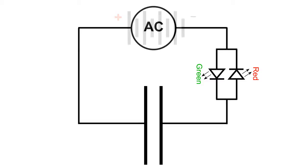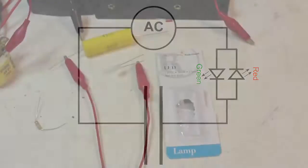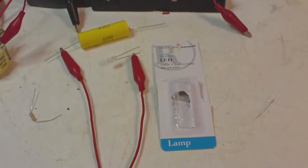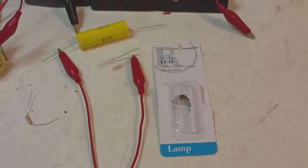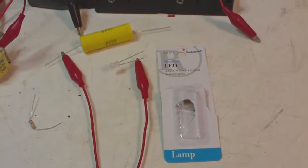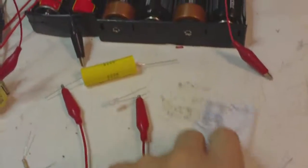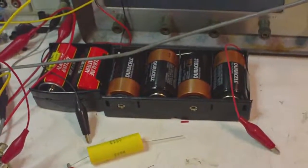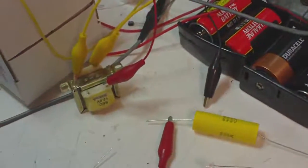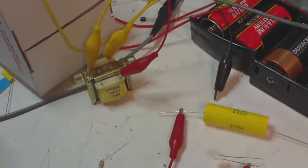And the next demonstration is going to be with an AC source. Okay, here's the setup. There's the bi-color LED, red and green. And there's our DC source, six batteries. And that little transformer there is going to be our AC source.